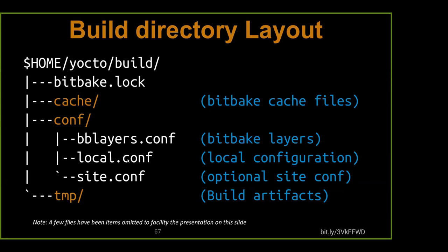In local.conf you also define what machine you're going to be building for — QEMU x86, your foo machine, or a BeagleBone Black. Optionally you might have a site.conf, depending on your situation. Let's say you're working in a group and want to set some policies — site.conf might say all our shared state cache is over on this NFS server, or the downloads directory for everybody is on this NFS server, or you want to use a particular mirror for local files. Those things would be in site.conf, shared among everyone using it.